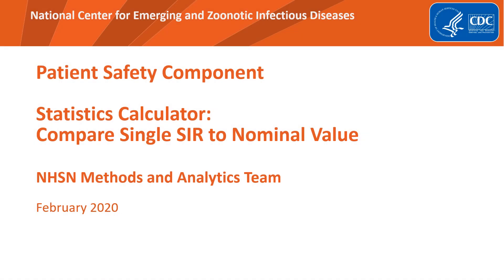Welcome to the 2020 National Healthcare Safety Network, or NHSN, QuickLearn series. These are brief and informative presentations from the Centers for Disease Control and Prevention. They serve as an educational resource for healthcare facilities working to prevent healthcare-associated infections, or HAIs. In this QuickLearn, we discuss using the Compare Single SIR to Nominal Value option of the Statistics Calculator in NHSN.